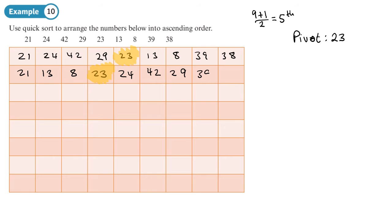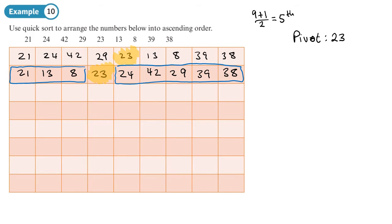The 39 and 38 remain on the outside right. We now have two sub-lists and need to find the pivot of each. The pivot of the left sub-list is 13, and the pivot of the right sub-list is 29. On the left, 8 pivots to the left side and 21 pivots to the right of 13.